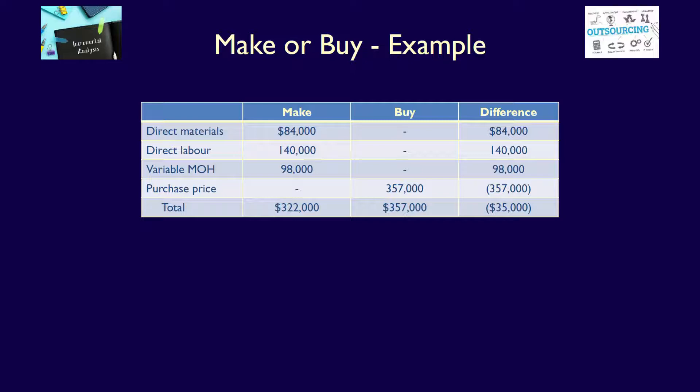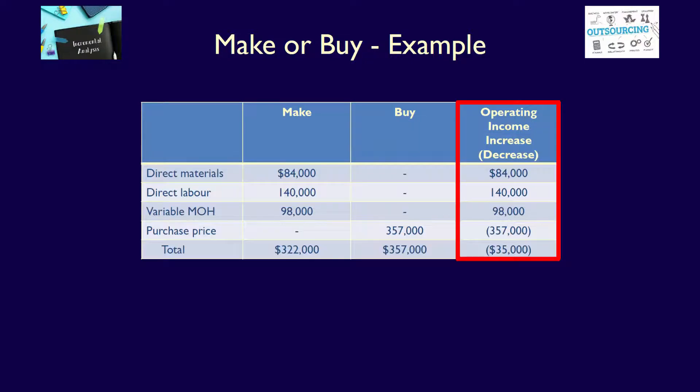What exactly does this mean? The difference is really equal to the increase (positive) or decrease (negative) in operating income for the company. In this case, the company's operating income will decrease by $35,000 if the company decides to buy the component. The company, given this information, should continue to make the component because it will save them $35,000 in operating income.